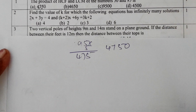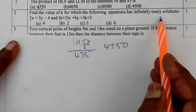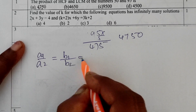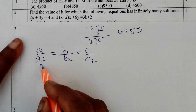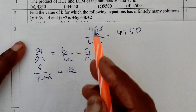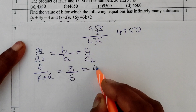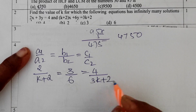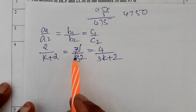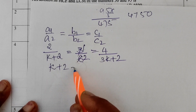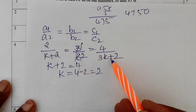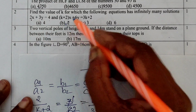Second question: find the value of K for which the following equations have infinitely many solutions. For infinite solutions, the condition is A1/A2 = B1/B2 = C1/C2. So: 2/(k+2) = 3/6 = 4/(3k+2). Now, 3/6 = 1/2. Cross multiplying, k+2 = 4, so k = 4 − 2 = 2. The answer is option B.